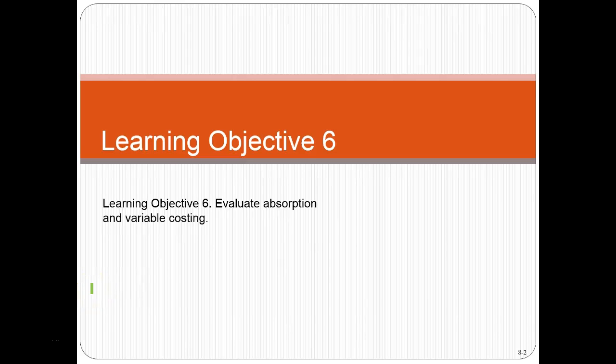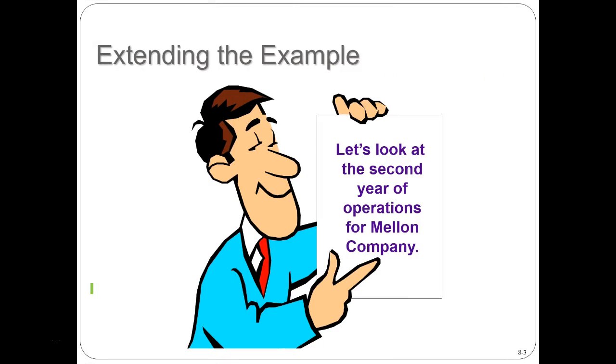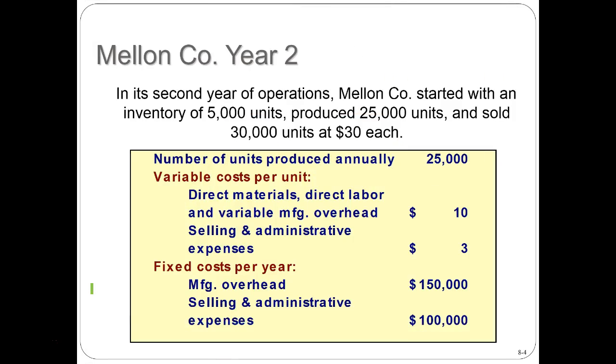Hello, this is Bob Steele. In this video we will continue on chapter 8 learning objective number 6, which is to evaluate absorption and variable costing. We're going to continue on to the next year and look at the differences between these two methods. Let's look at the second year of operations of Mellon Company.